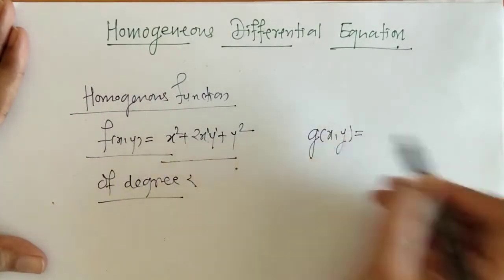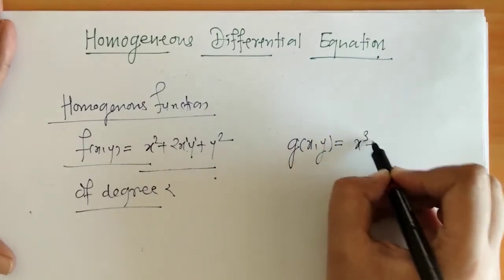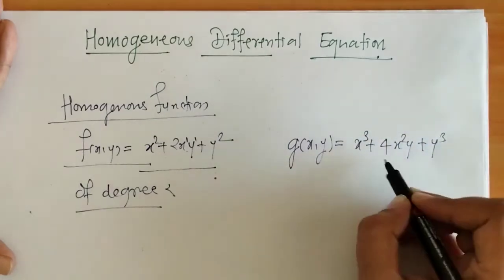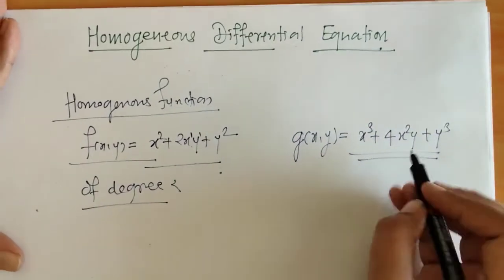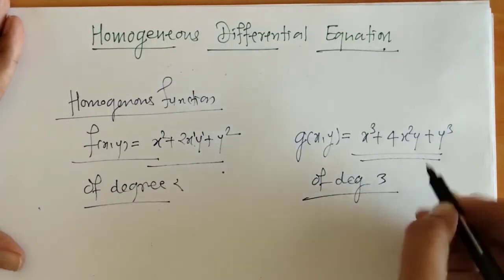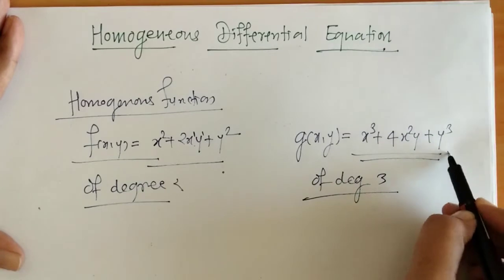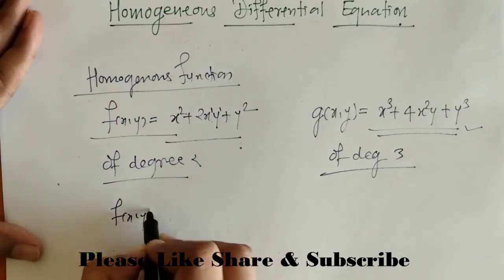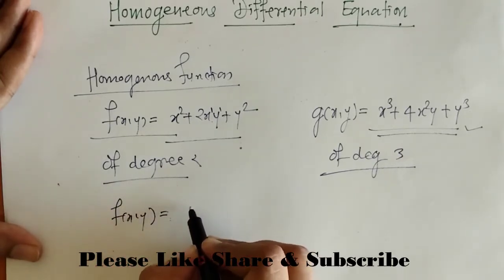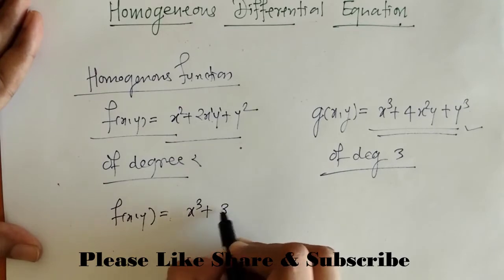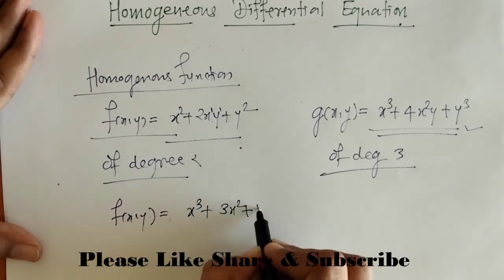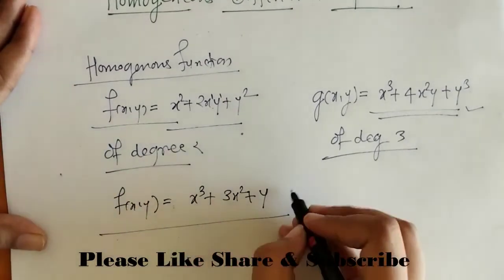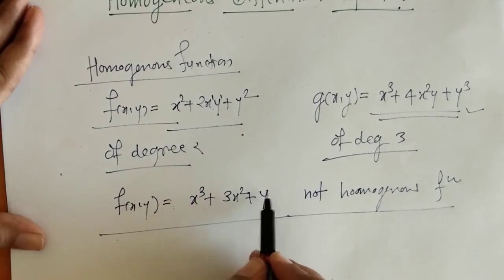Similarly, take another example: f(x,y) = x³ + 4x²y + y³. This is also a homogeneous function of degree 3, since the degree of each term is 3. However, if we have f(x,y) = x³ + 3x² + y, this is not a homogeneous function, because the degree of each term is not the same.